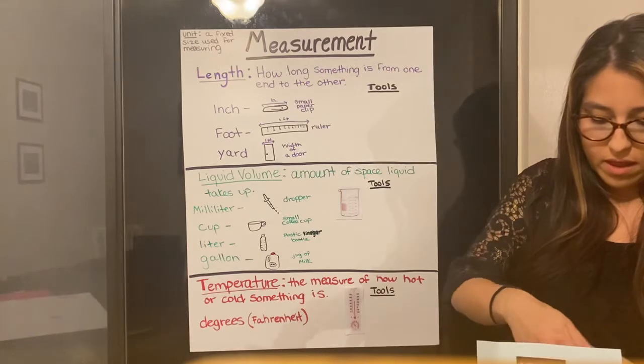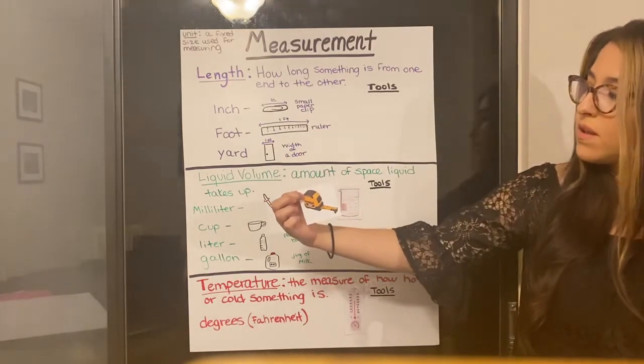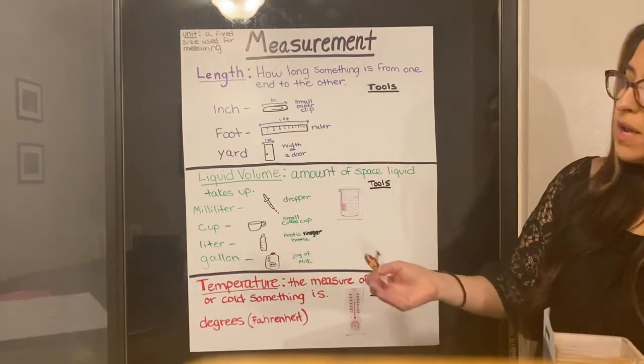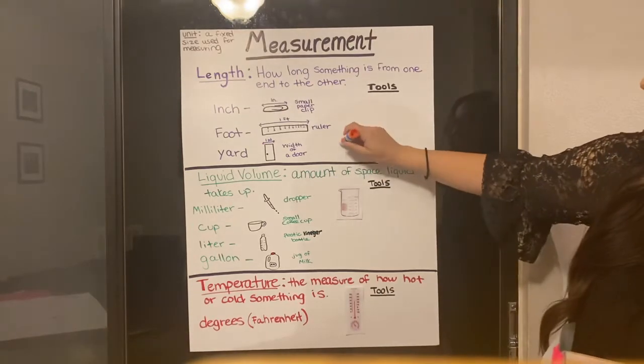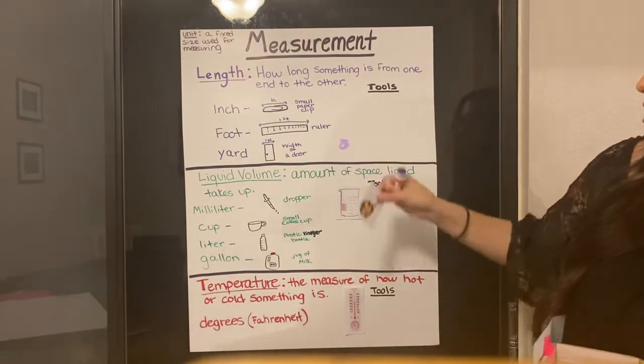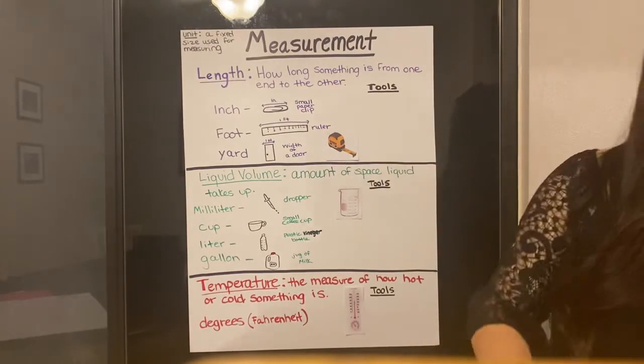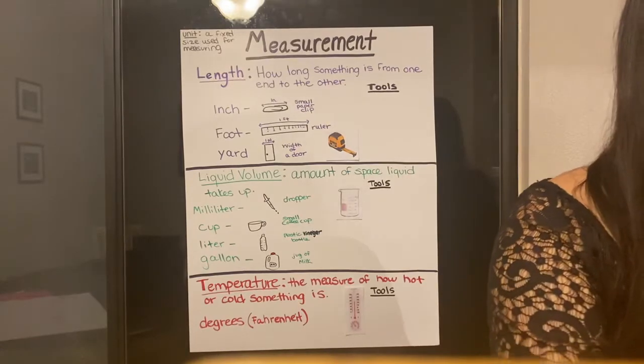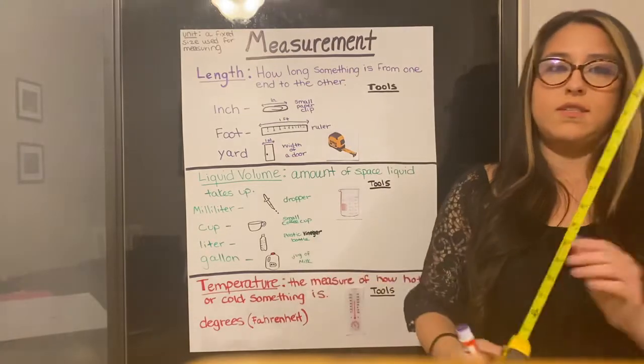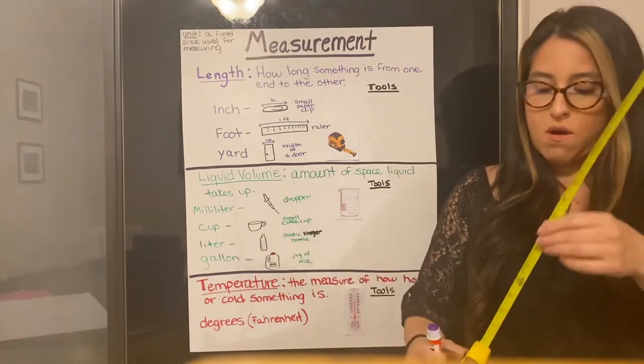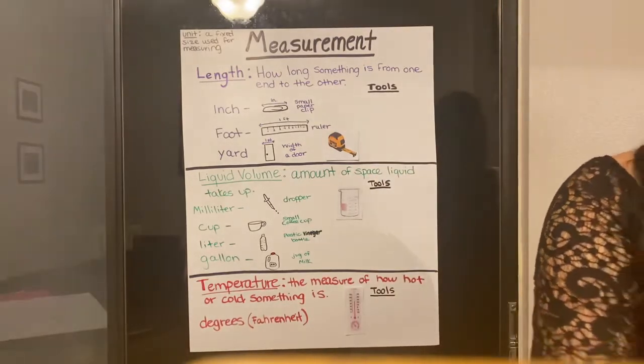Next we have a measuring tape. This will be a tool to measure length. It would be more on the bigger side. So if we want to measure how tall we are or how long the door is, we could use a measuring tape. And I actually have one here. Measuring tape. It's pretty cool. They stay nice and stiff, so you can check how tall you are. You can measure your desk.